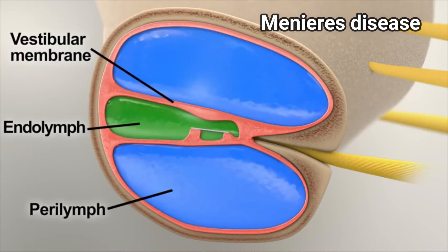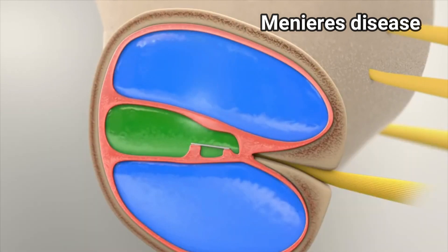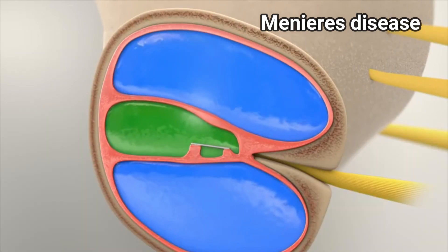Inner ear causes involve disturbances in the perilymph and endolymph fluids. With age, the hair cells in the cochlea become damaged, leading to tinnitus.